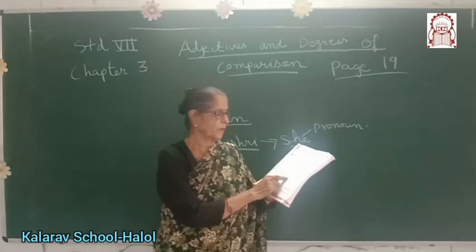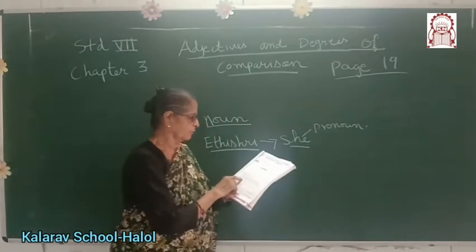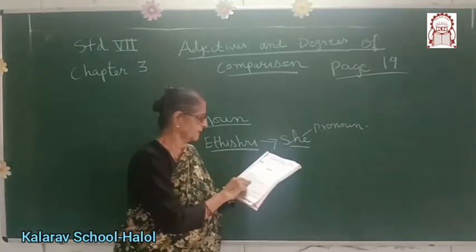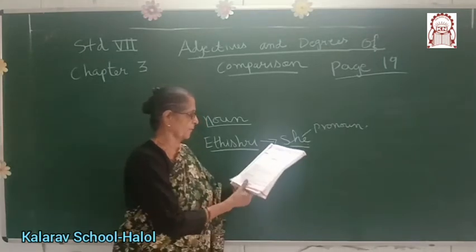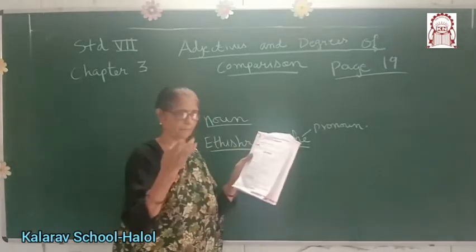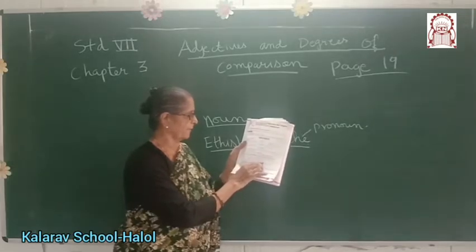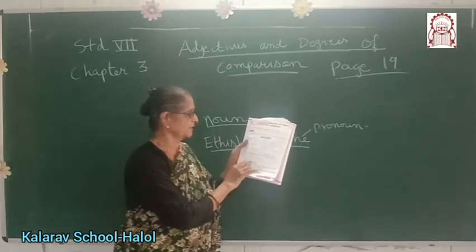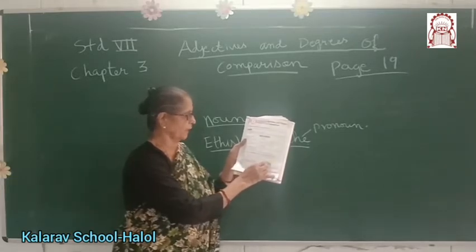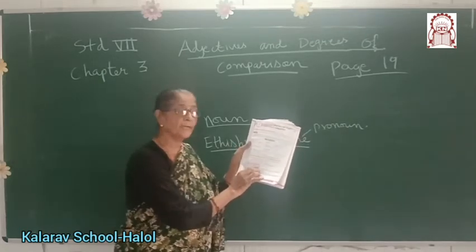Adjectives of quantity show you how much. These adjectives are measuring words that modify the noun. For example: you have enough time to complete the work — how much time? Enough. They indicate the quantity of the noun or pronoun they describe. Examples are some, more, enough, much, and all. They answer the question how much and are used with uncountable nouns.